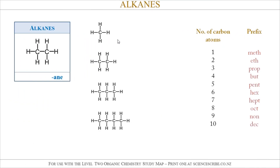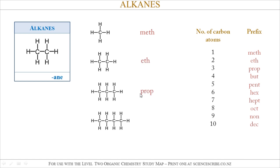If we were to have a go at naming Alkanes, the way we would do it is to look at each of our Alkane molecules and look for their longest chain. In the first example, the longest chain is only one carbon atom long, so it starts with the prefix Meth. In the second molecule, I've got two carbon atoms as my longest chain, so it's Eth. Third one, three carbon atoms — Prop. Fourth one — But.